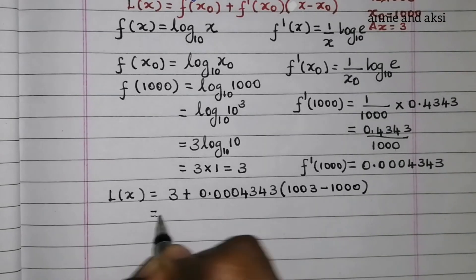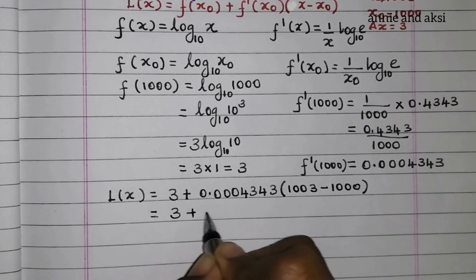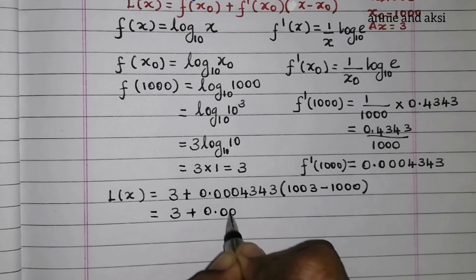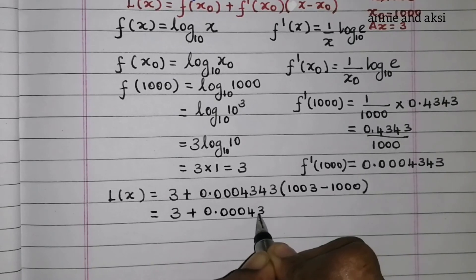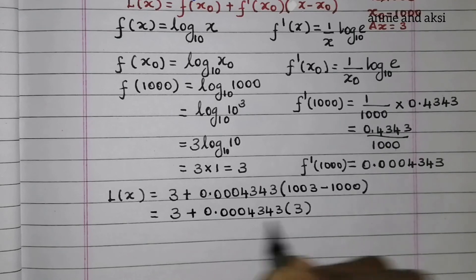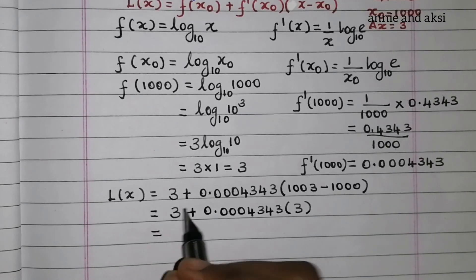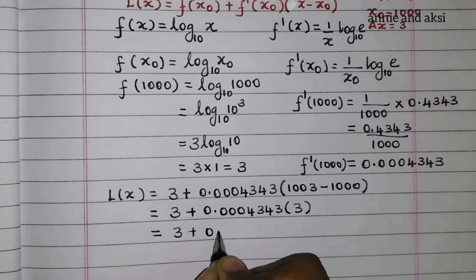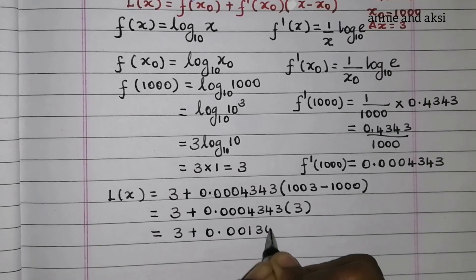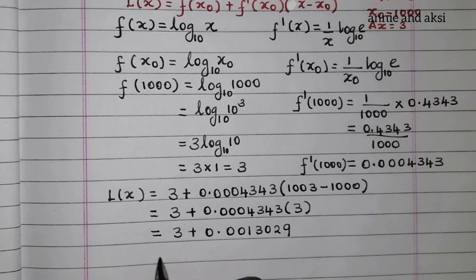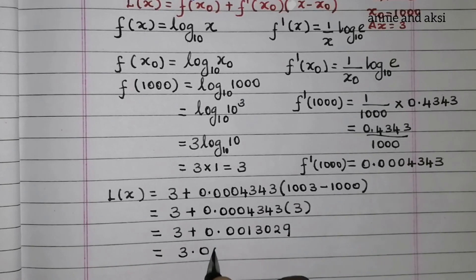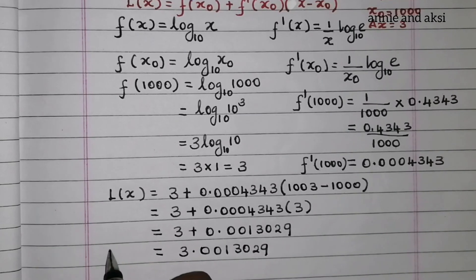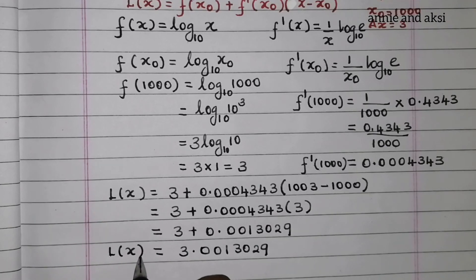Using the linear approximation formula: L(1003) = f(1000) + f'(1000) · (1003 − 1000) = 3 + 0.0004343 × 3 = 3 + 0.0013029 = 3.0013029. This is our required approximate value.